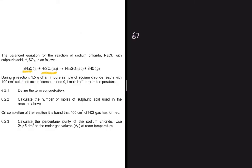The first question, 6.2.1, is an unusual one — define the term concentration. We never really worry about the definition, but we know the formula: C equals n divided by V. From this we derive that concentration is the number of moles per unit volume of a given substance.